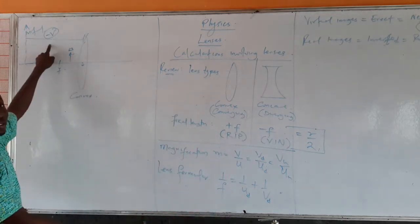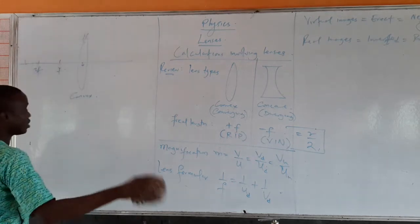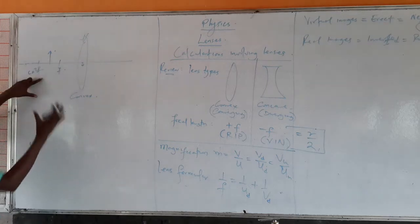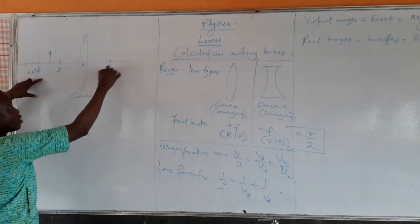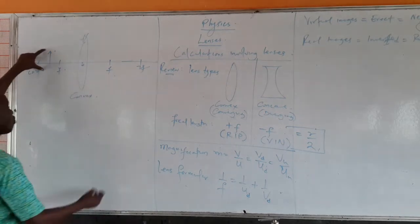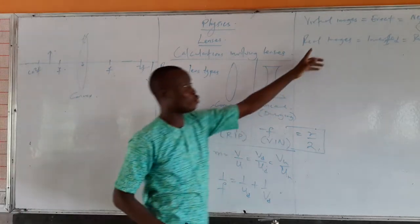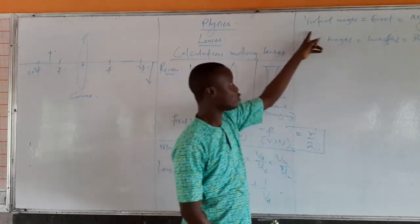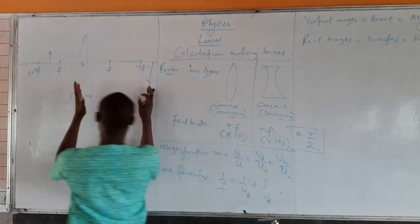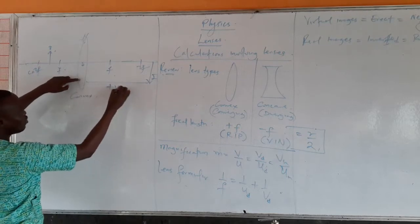But if the object is placed between 2F — which is the center of curvature — and F, then my image is going to be real. Real images for lenses are formed on the outside of the lens, and the image will be enlarged. Real images are always inverted, while virtual images are always erect and taken as negative V. For the inverted real image, the distance from the lens is taken as positive V.